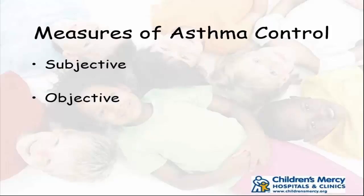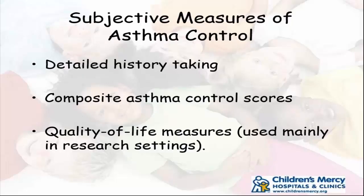Coming to measures of asthma control — the measures can be classified as subjective and objective. Subjective is what the patient says; objective is what you can measure. We can never underscore the importance of detailed history-taking enough. You can walk into a room and say 'is asthma doing okay?' and the patient says 'yeah' and you're done, or you could say 'tell me about the problems you had' and get a better history. There are composite asthma control scores and quality of life measures. We don't really use quality of life measures in asthma here — it's more a research setting.